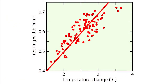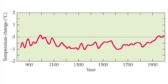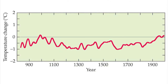The width of growth rings, especially for trees found near their altitudinal or latitudinal limits, increases with air temperatures. Temperatures during the middle of a growing season have the strongest influence on ring width. A compilation of tree ring data from the Northern Hemisphere indicates that air temperatures today are as warm as any time during the last 1,200 years.